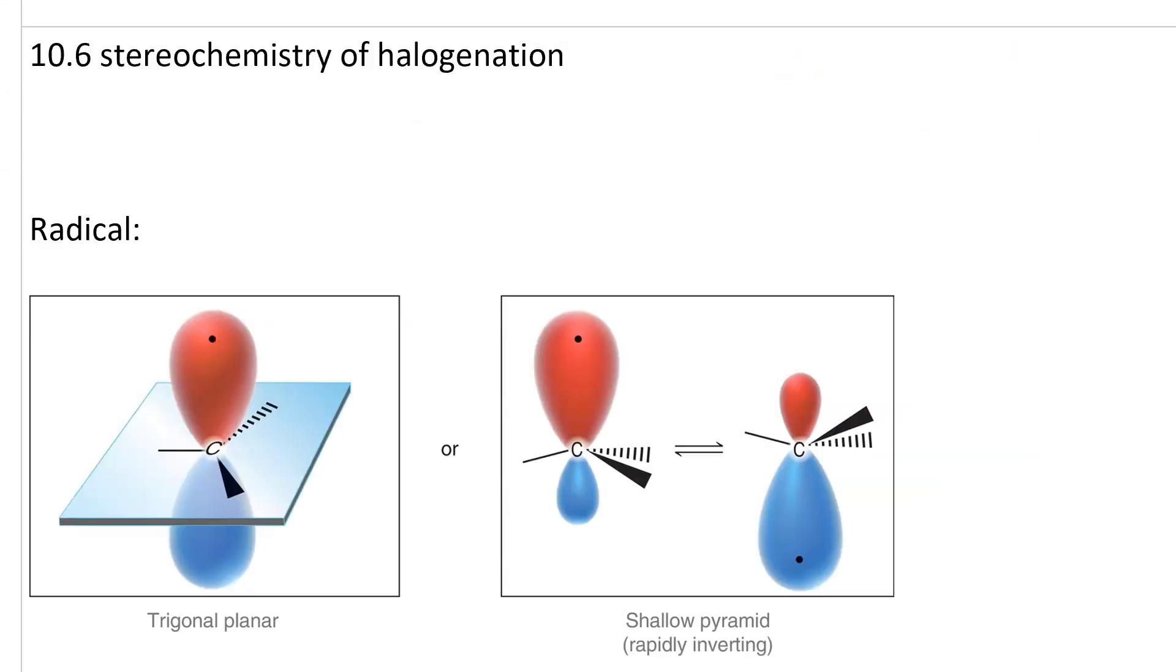In terms of the stereochemistry of halogenation, if you think of your radical as being either planar or a rapidly inverting shallow pyramid, you can have reactions from either the top or the bottom. Hence, you will always get a racemic mixture if a chirality center is produced.